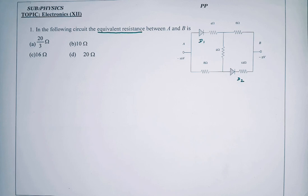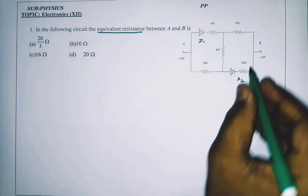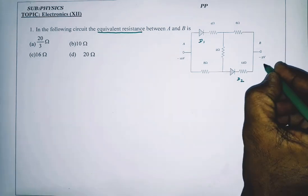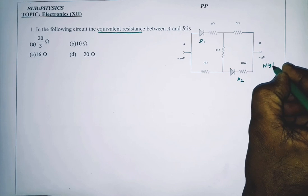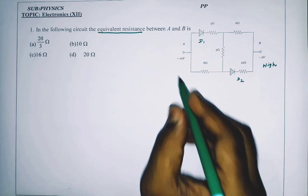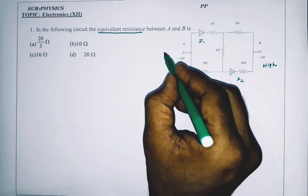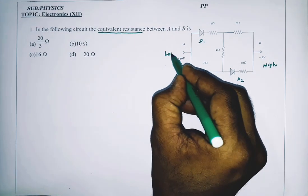Minus 10 and minus 2 volts. Minus 2 volt is the higher potential, and A at minus 10 is the lower potential.